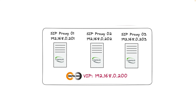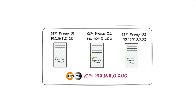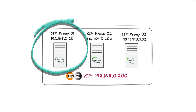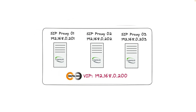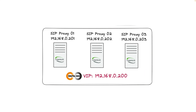Now let's talk about VRRP. It's like an arrangement these Camellia servers make. They decide: 'We've got this special VIP address 192.168.0.200. Right now Camellia Server 1 says I'm the boss, the master. So if anyone asks for our VIP, I'm the one who answers with the MAC address.' But if the current master Camellia server goes down, it's all good — the other Camellia servers are in line, ready to take over. In a nutshell, VRRP is like an agreement among our servers. They take turns being the boss for the special VIP address. If one needs a break, the others step up, keeping the communication going.